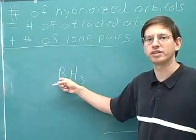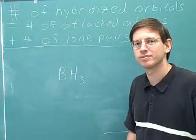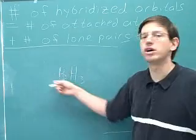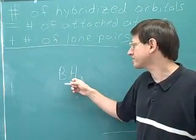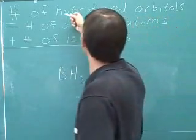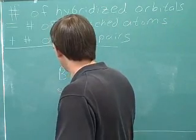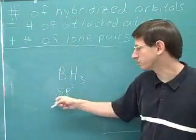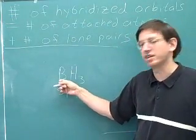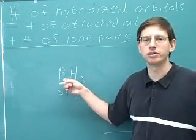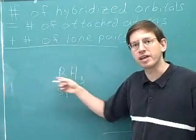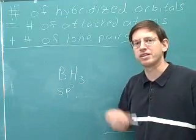What's the hybridization of this boron? It's attached to three hydrogens and there are no lone pairs — three plus zero equals three. So the number of hybridized orbitals is three, making it sp2. By the way, you might notice that this boron has an incomplete octet. Some elements on the left-hand side of the periodic table can have incomplete octets, and boron is the most common example of that in organic chemistry.